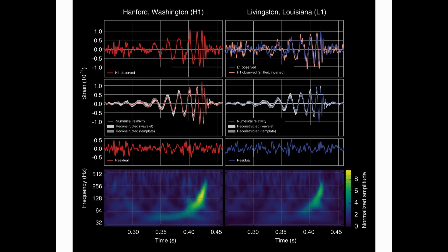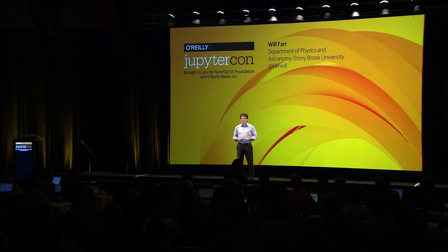That is a gravitational wave. It was the first ever gravitational wave detected. We call the source GW150914 because, imaginatively, that's the date. We know one of the reasons we know it's a gravitational wave is we saw it simultaneously in two detectors that are across the United States.